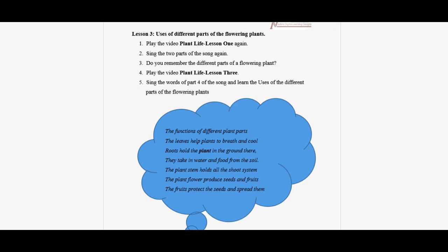The functions of different plant parts: the leaves help plants to breathe and cool. Roots anchor the plants in the ground. They take in water and food from the soil.